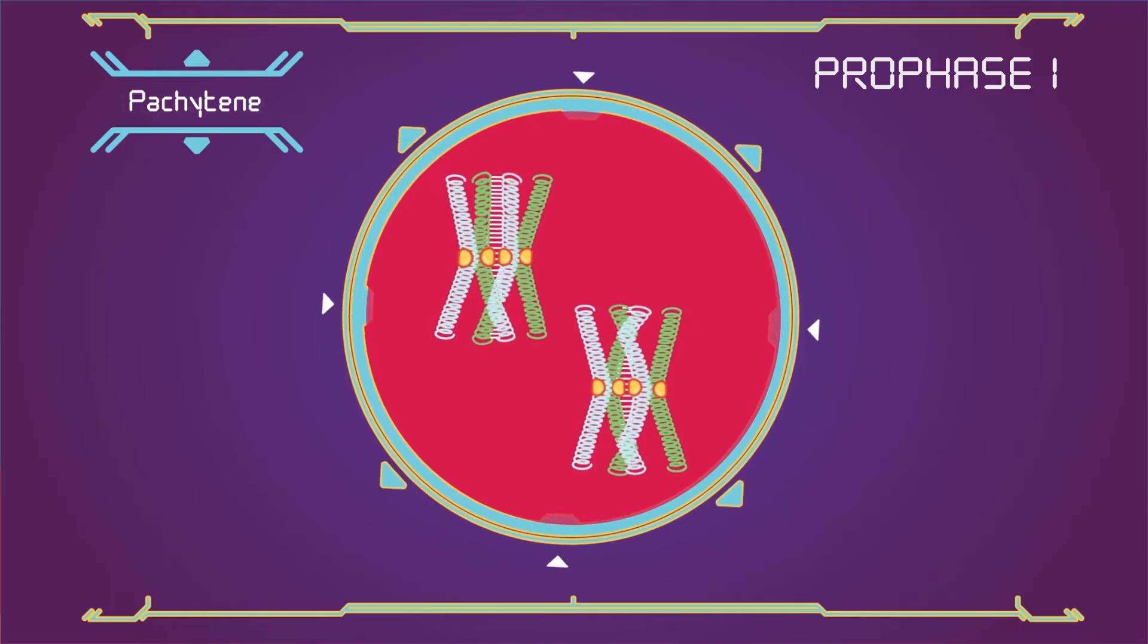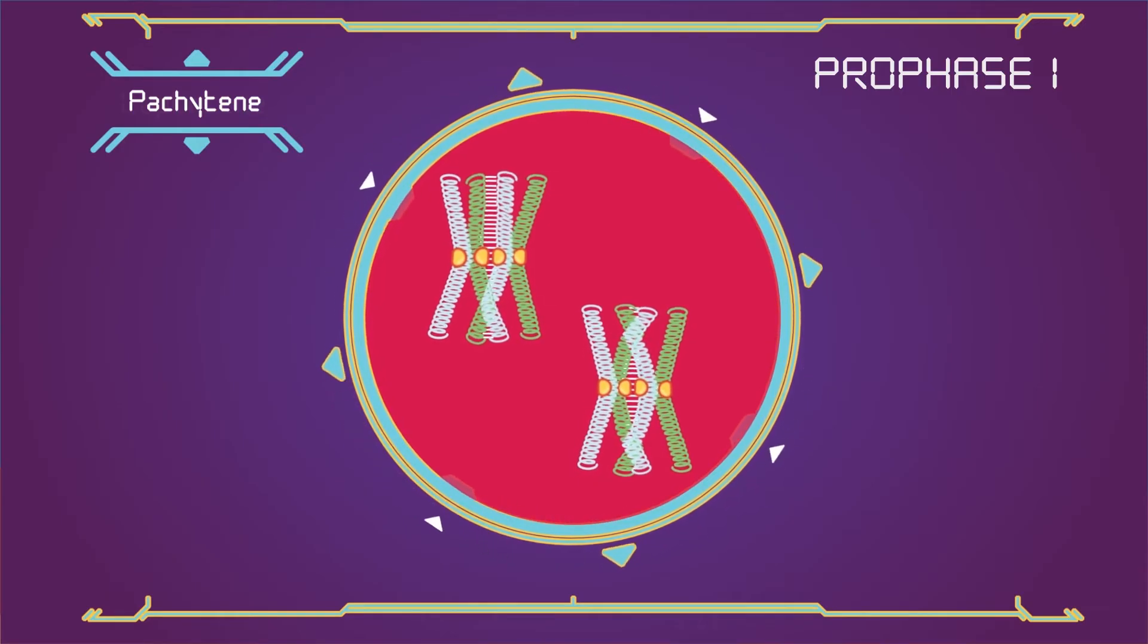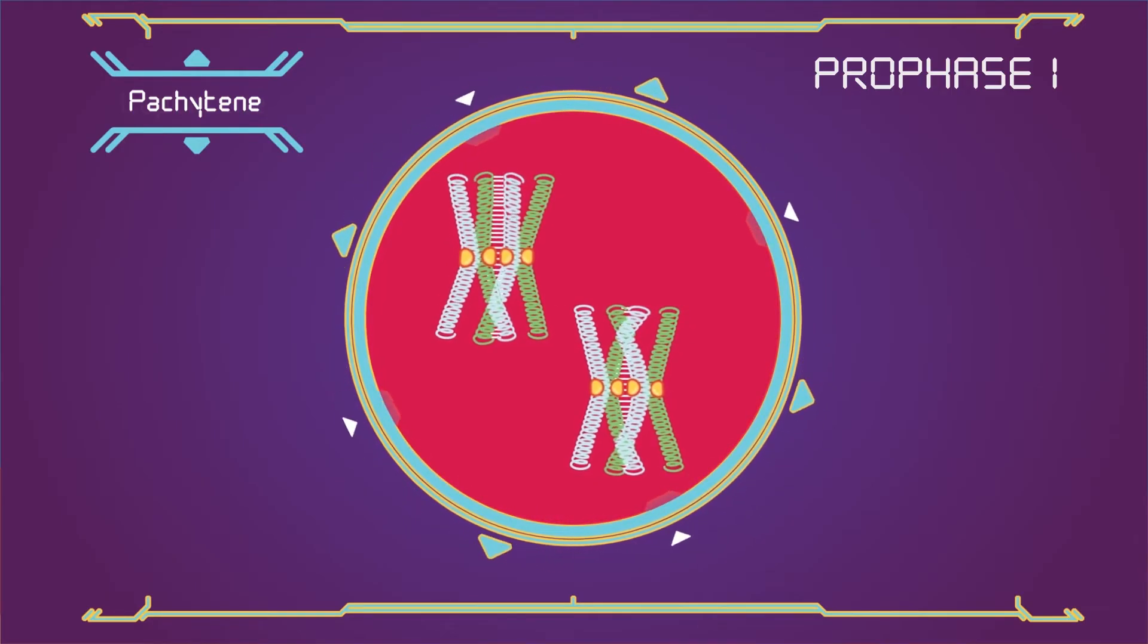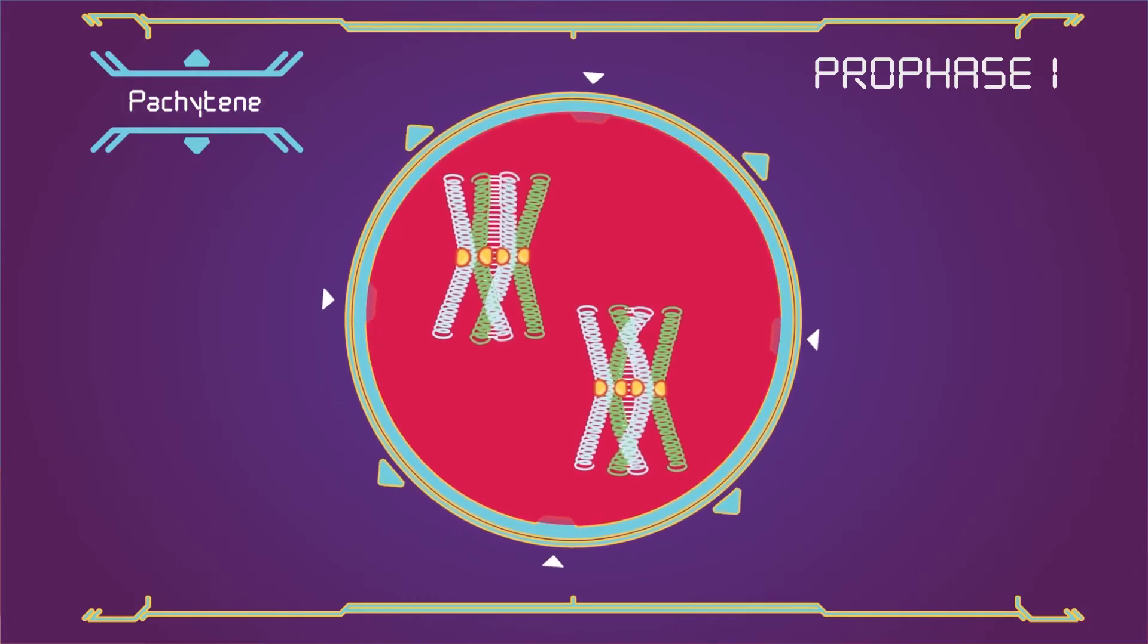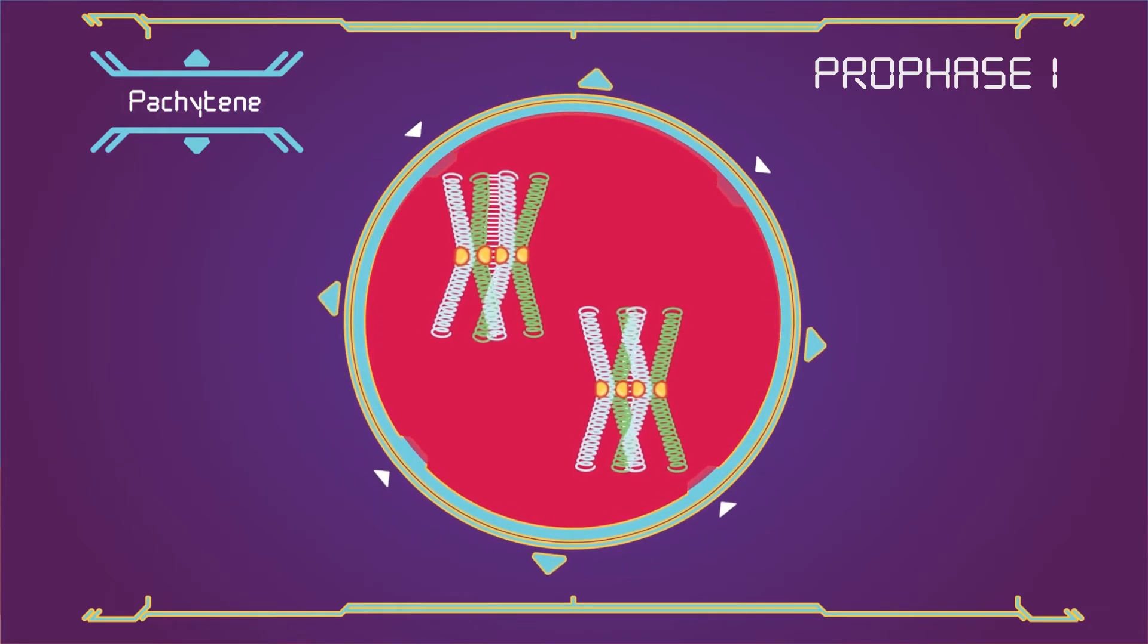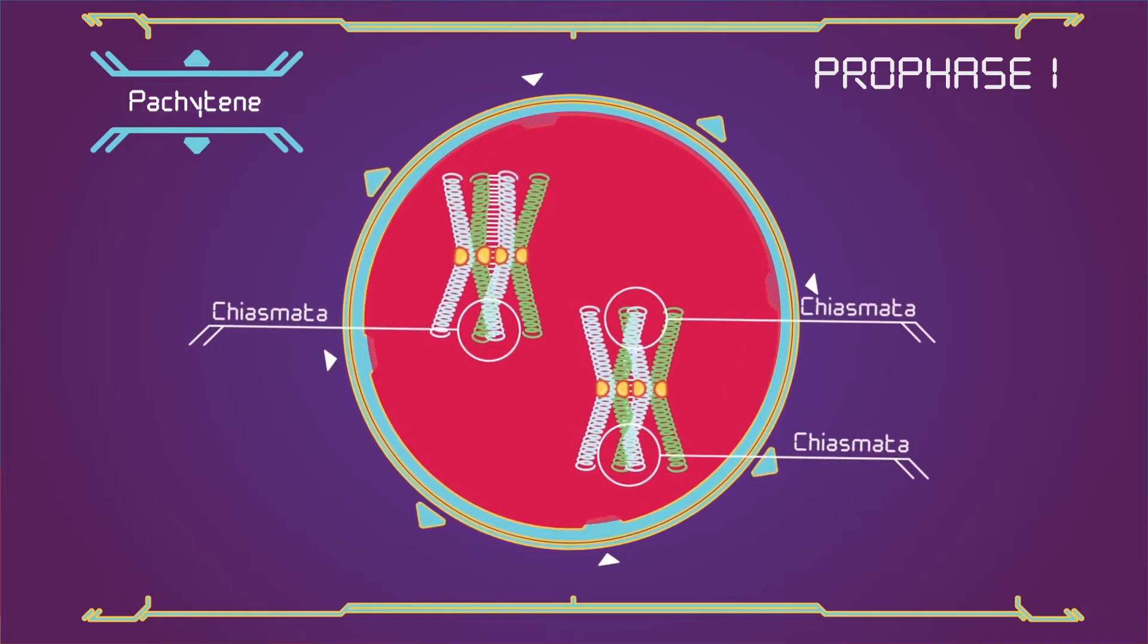Packetine. This is the stage when homologous recombination, including chromosomal crossover (crossing over) occurs. Non-sister chromatids of homologous chromosomes may exchange segments over regions of homology. At the sites where exchange happens, chiasmata form.